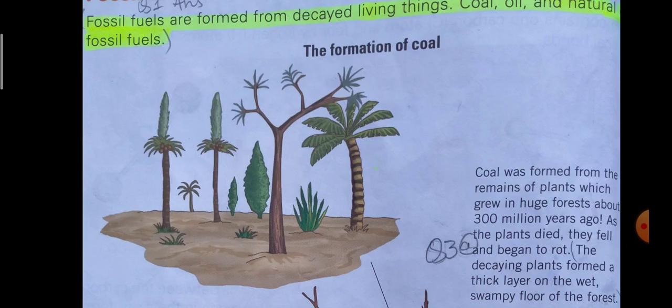The formation of coal occurs in two steps. The first is peat formation. Coal was formed from the remains of plants which grew in vast forests about 300 million years ago. As the plants died, they fell and began to rot, and the decaying plant material formed a thick layer on the forest floor.